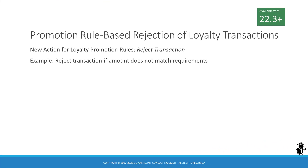The Siebel loyalty guide in Bookshelf contains information about the new action type introduced for loyalty promotion rules. This type, namely reject transaction, can be used by loyalty administrators to define loyalty promotion rules that validate incoming loyalty transactions. For example, a transaction can be rejected based on a condition that refers to the amount field. If the amount field is not within the allowed range, the transaction will not be processed.